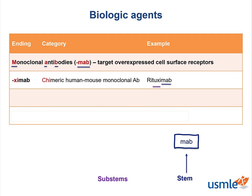We'll use rituximab as an example. The first substem, which is closer to the stem, is called the source substem, and it tells us where we got this monoclonal antibody from.